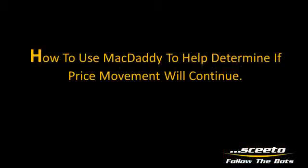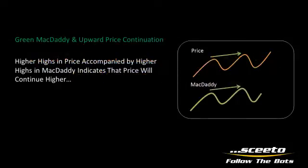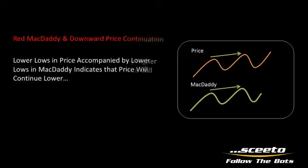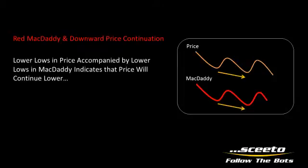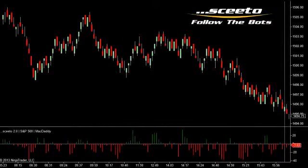This week, we're showcasing a very simple technique that offers insight into the probability for further price continuation. This technique uses just price and MacDaddy, and earlier this week in Monday's and Tuesday's order flow recap video, you'll see some additional examples of this. The rule of thumb is when you see a higher high in price accompanied by a higher high in MacDaddy, this indicates that price will continue higher. Conversely, when you see a lower low in price and a lower low in MacDaddy, this indicates that price will continue downward. In today's heavily downward market, you'll see this phenomenon repeat itself over and over again.